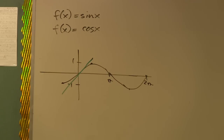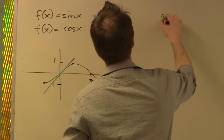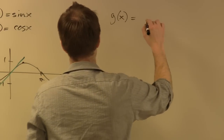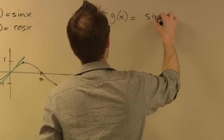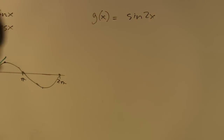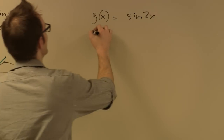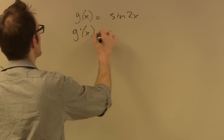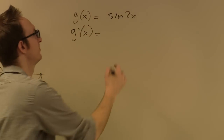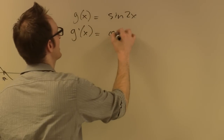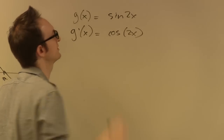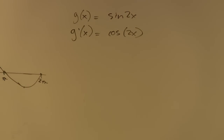So now comes a new function, a very similar function: sine 2x. Without thinking about it more than three seconds, just shout out a wild guess — what do you think the derivative of sine 2x is? Cosine 2x. So conjecture, by 70% of the class: the derivative of sine 2x is cosine 2x.